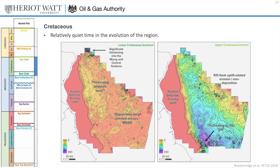Moving up to tectono-stratigraphic unit C. The Cretaceous was a quiet time for the region, with thermal subsidence and limited tectonic activity. These maps show the isochrons for the lower Cretaceous on the left and upper Cretaceous on the right. Note the later erosion of these units at the seabed in the west. Despite this later overprint, sedimentation was fairly consistent across the region, with the exception of a depositional thin over the flank of the central graben in the northeast.